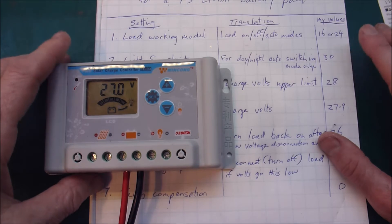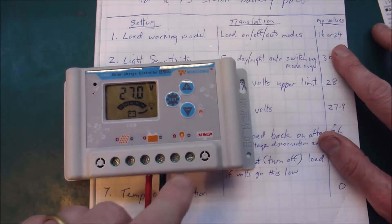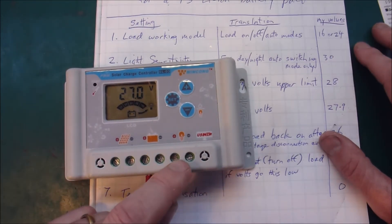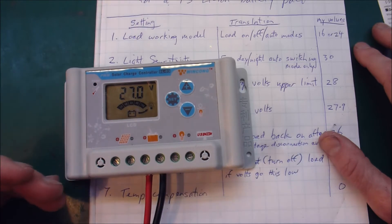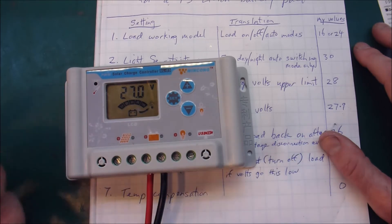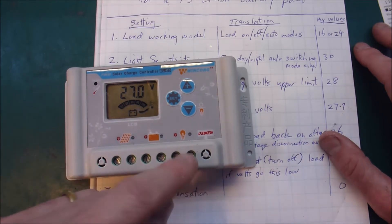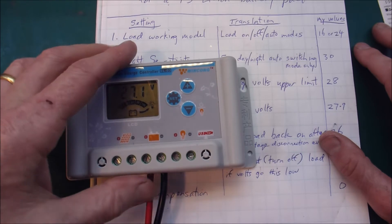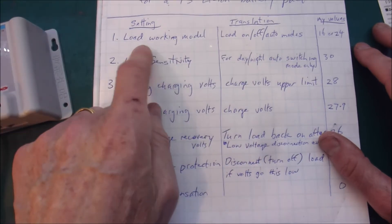And then there's a bunch of modes for automatically switching the load on just after dusk. When the voltage drops down on the solar panels then it turns that on. And if you have garden lights for example, you can run them in that mode. So that's what the first setting is all about.